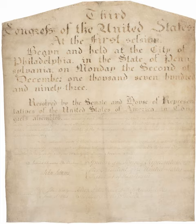The Eleventh Amendment was proposed by the Third Congress on March 4, 1794, when it was approved by the House of Representatives by a vote of 81–9, having been previously passed by the Senate 23–2 on January 14, 1794. The amendment was ratified by the state legislatures of the following states.